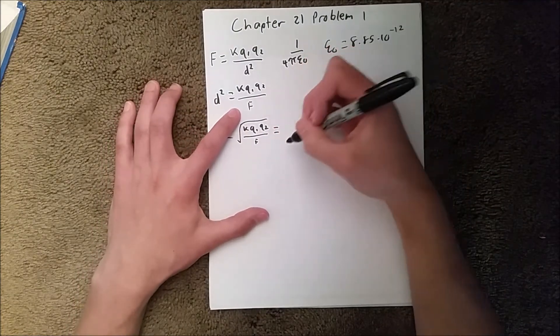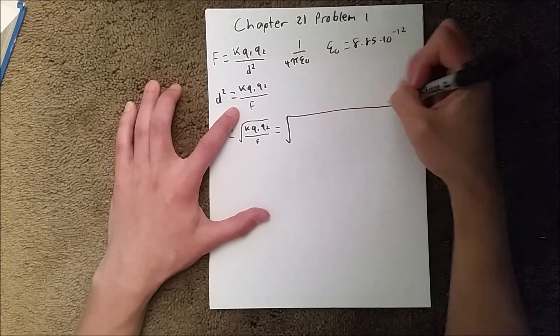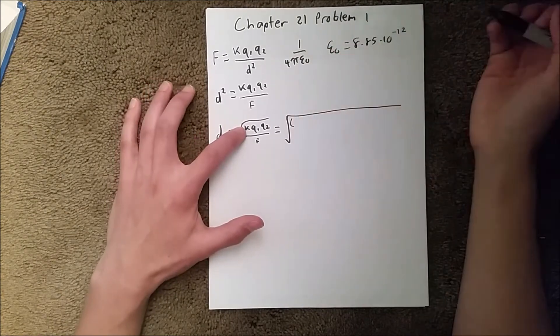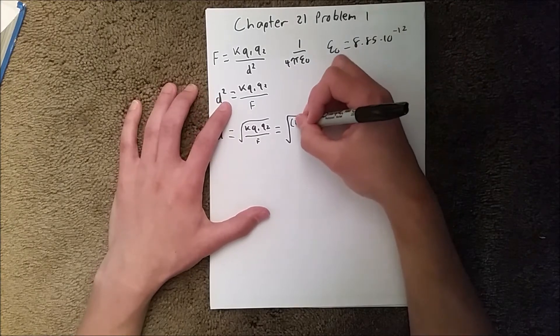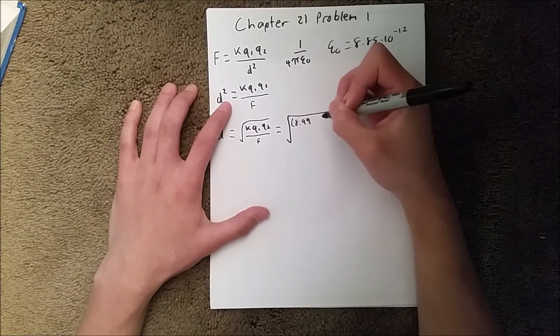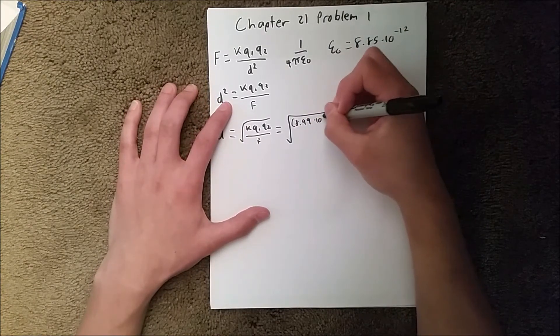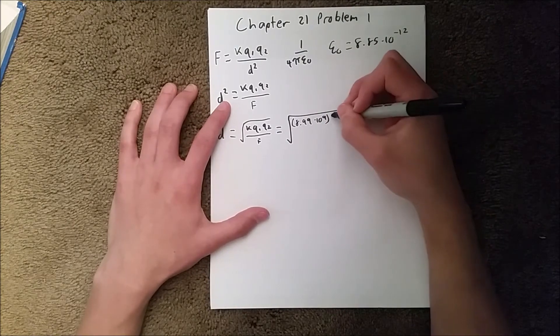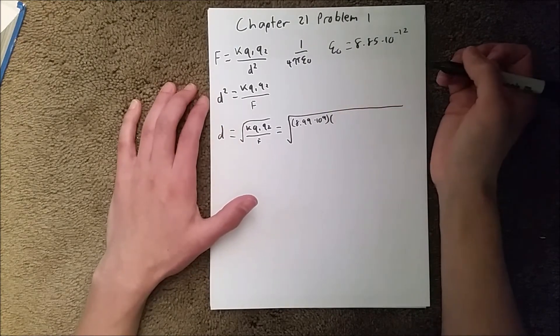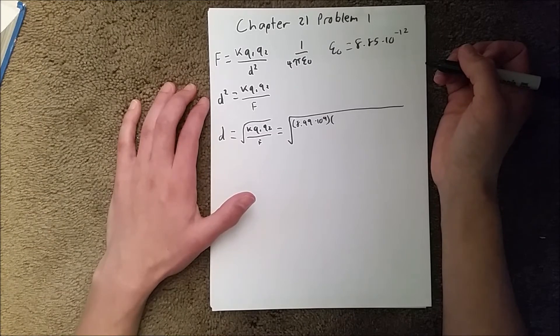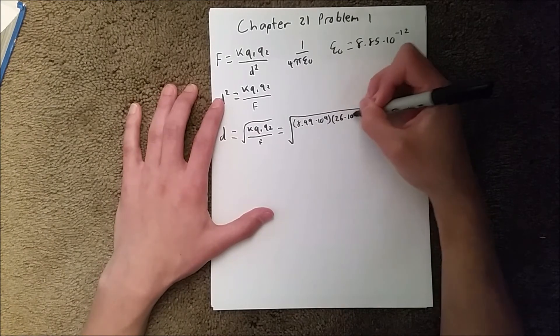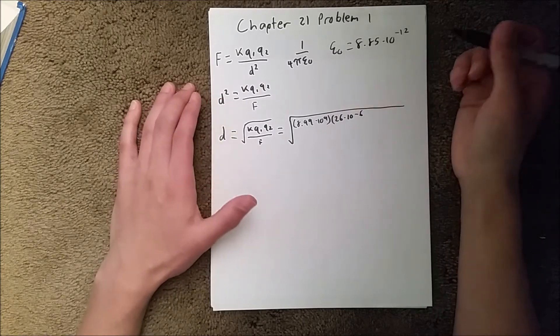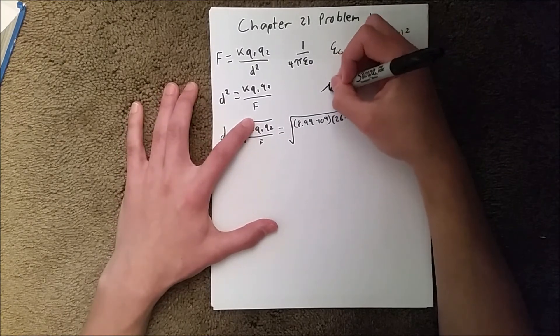Let's substitute in those values. So K when you put everything together is 8.99 times 10 to the 9th. Our first charge is 26 microCoulombs, so we're going to do 26 times 10 to the negative 6.